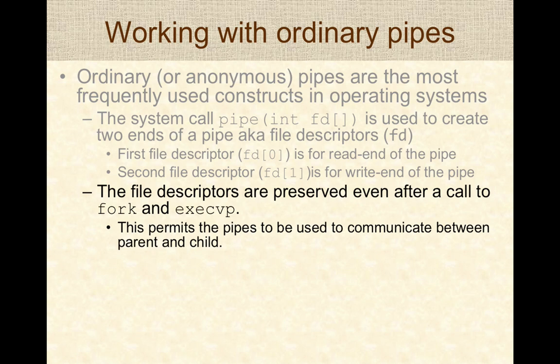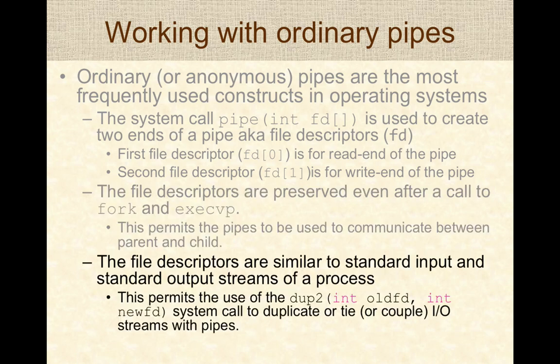The fork and exec system calls can be used to create a child process and run different programs. These file descriptors are preserved across fork and exec, which permits child processes to use pipes to communicate between the parent and child, or between two children of the parent. The file descriptors are similar to standard input and standard output streams, which permits the use of the dup2 system call to tie input-output streams with pipes, thereby enabling redirection or piping of standard input and output from one process to another.